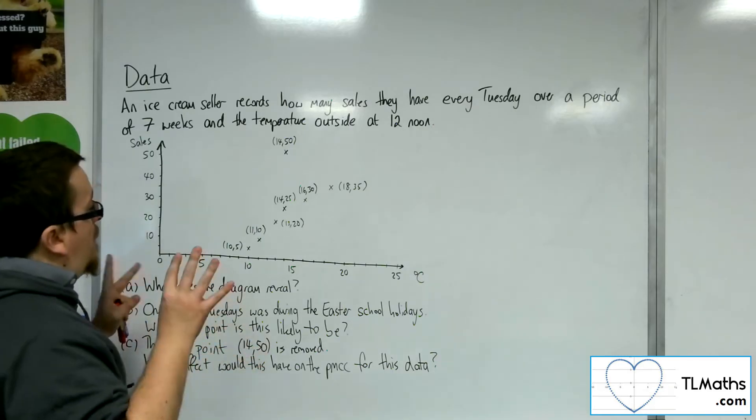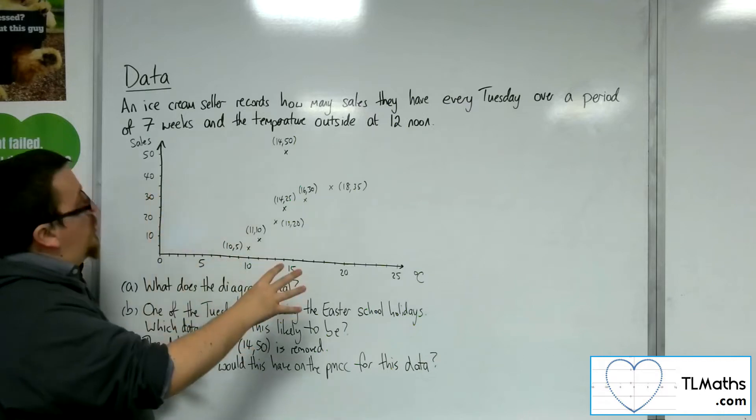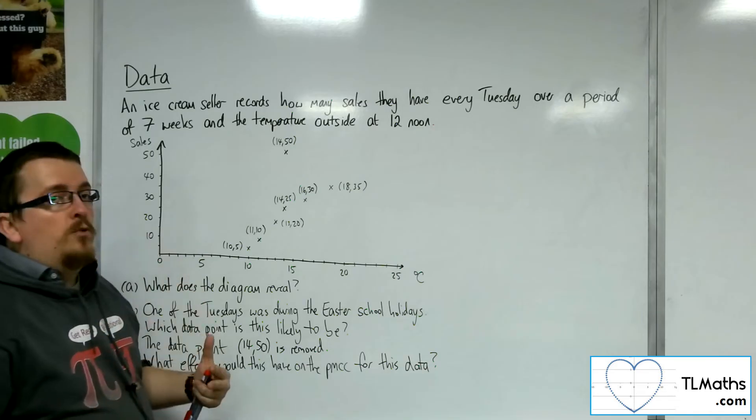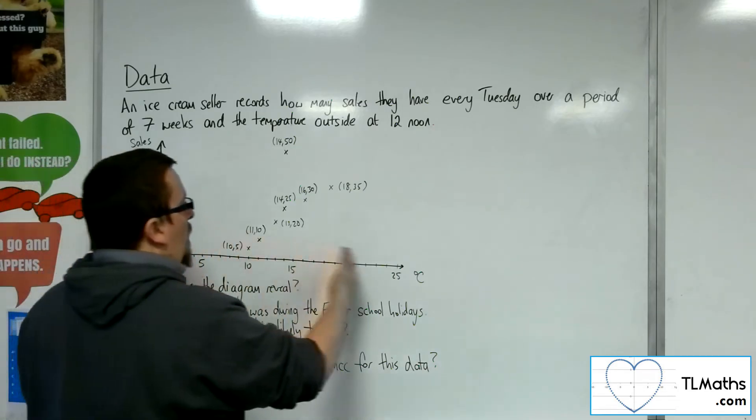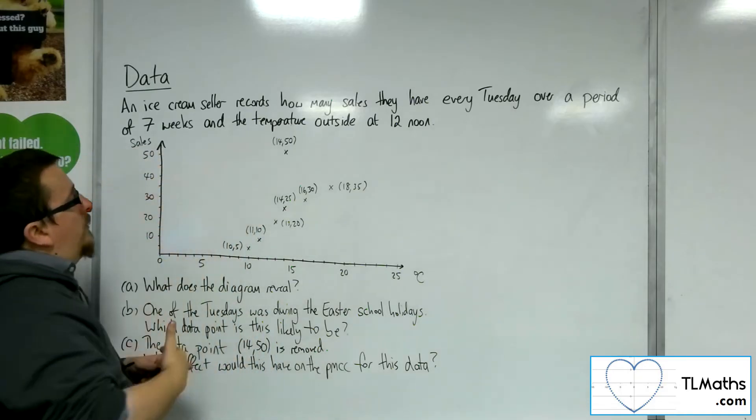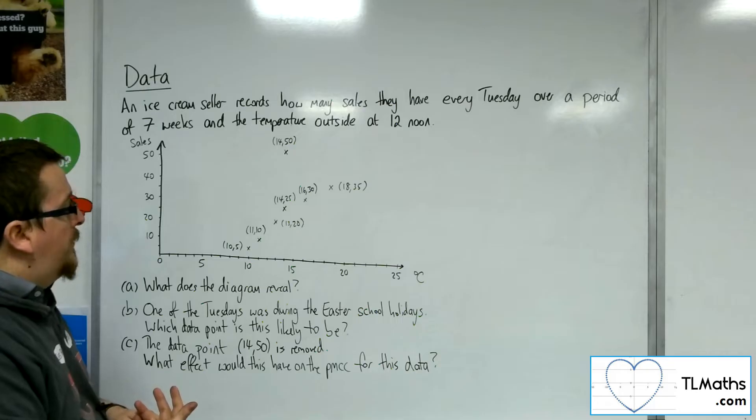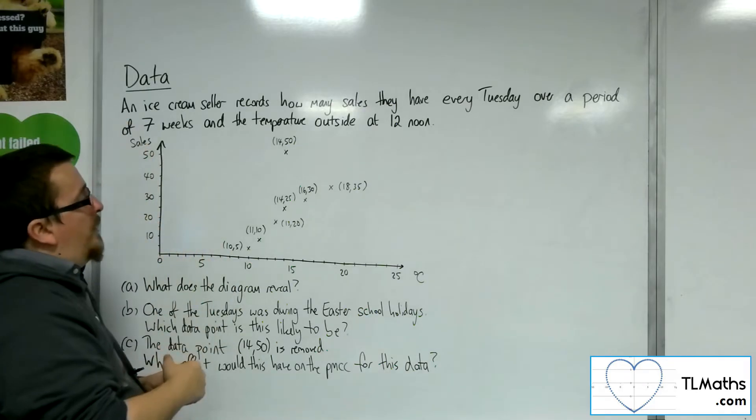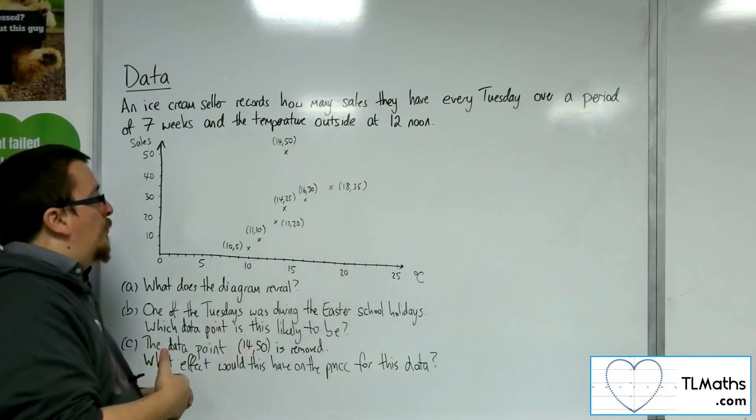And so there appears to be some connection between the temperature and the number of sales of ice creams, which is something that you would probably expect. So the warmer the temperature, the more sales of ice cream that there would be. Okay, so we'd be looking at the number of sales of ice cream depending on the temperature, which sounds appropriate.